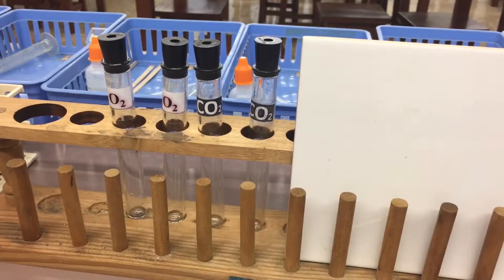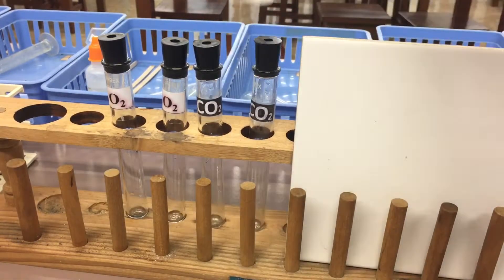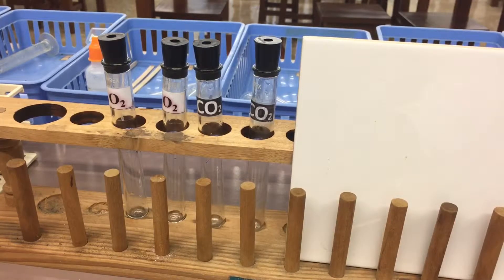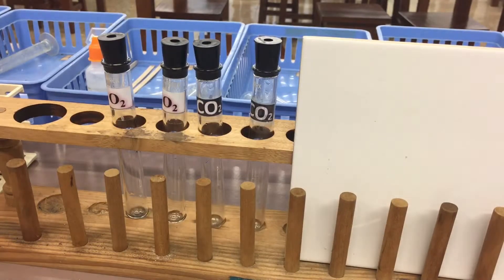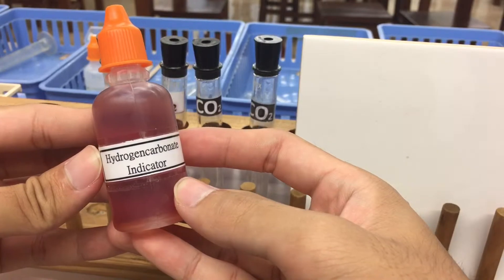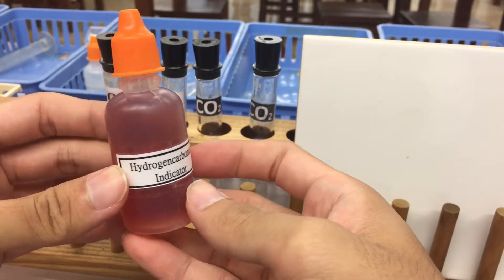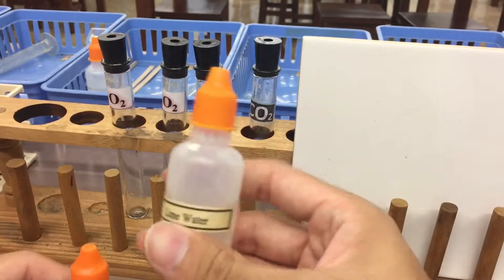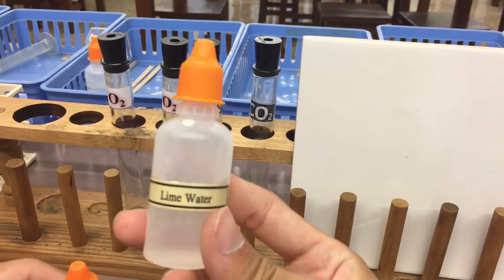For carbon dioxide, we use certain kinds of chemicals to test, which is two kinds. The first one is hydrogen carbonate indicator. The second one is lime water.